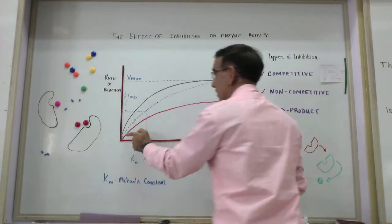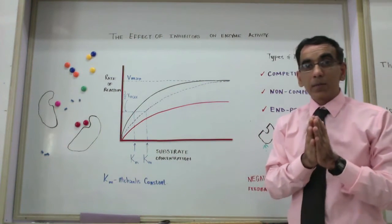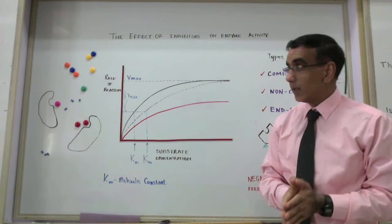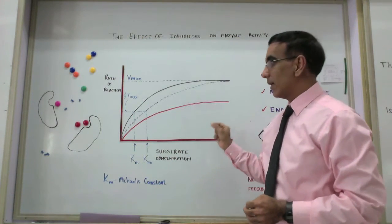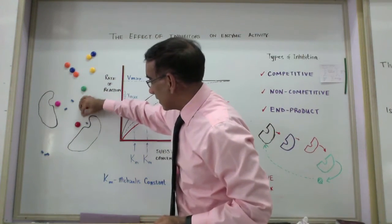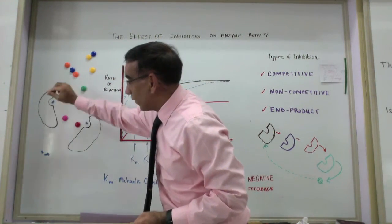In this second graph, we see the effect of competitive inhibition, and the competitive inhibitor has the ability to fit into the active site of the enzyme.